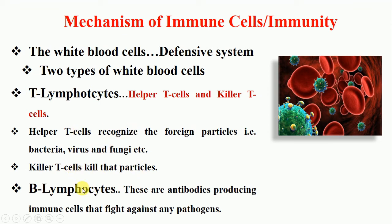B lymphocytes are antibody-producing immune cells that fight against pathogens. B lymphocytes produce antibodies, and the antibody-antigen reaction is very specific — each antibody targets a specific antigen.